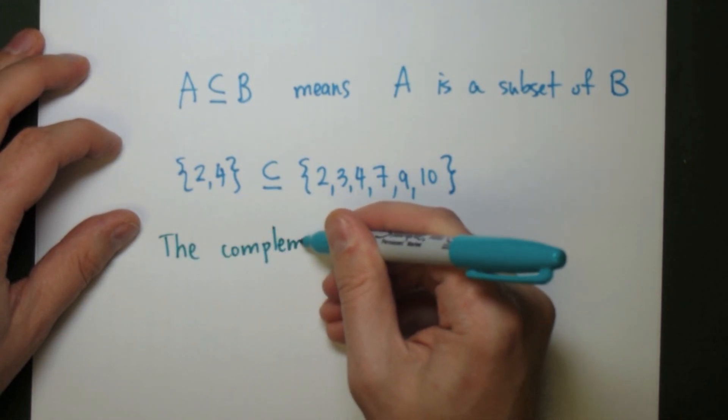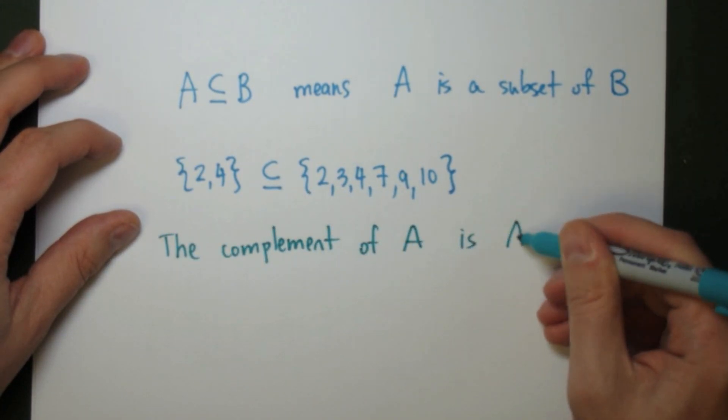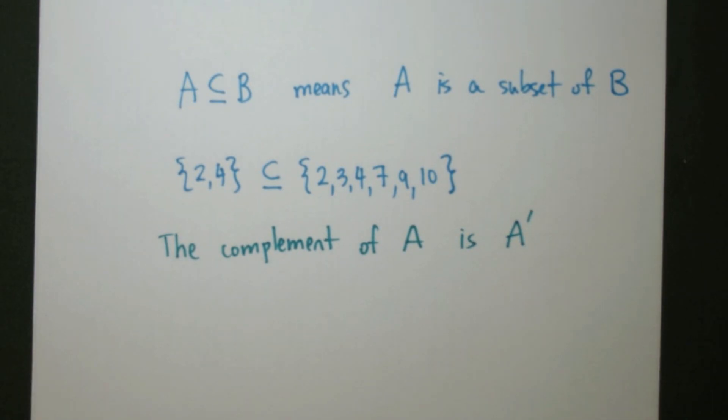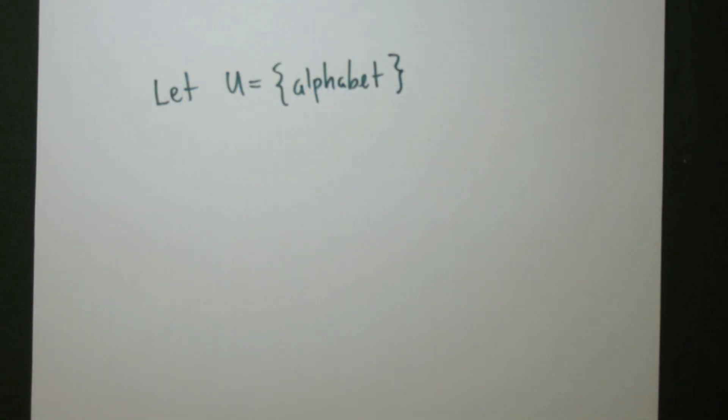If we have a set A, then we write the complement of A as A prime. This is assuming that the universe is already given.